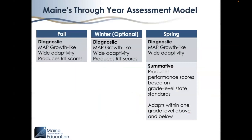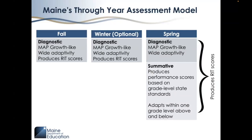While the Maine-specific scaled score is generated based only on the student's responses to the summative questions, the student's spring RIT score is based on responses to all questions on the assessment. The summative questions on the assessment have all been aligned to the RIT scale, allowing for their integration into RIT score determination.